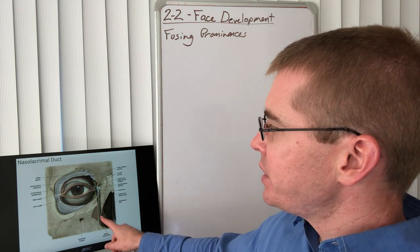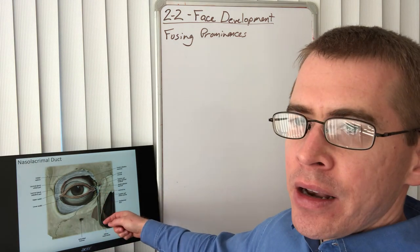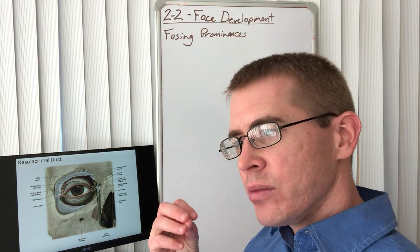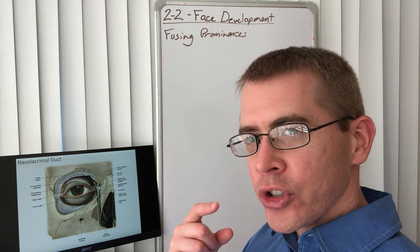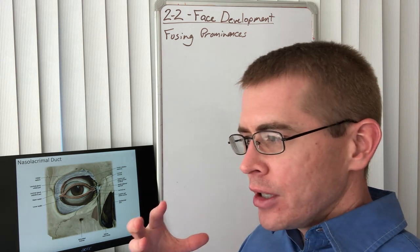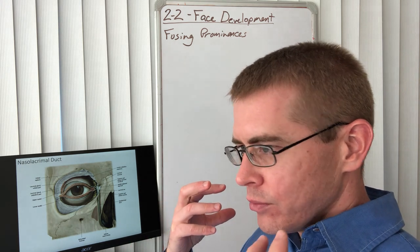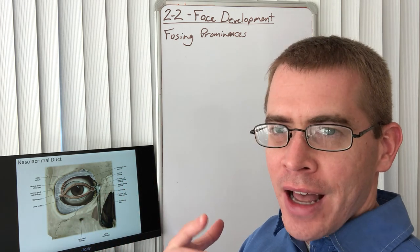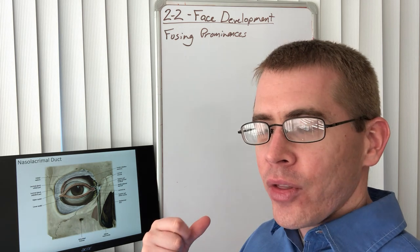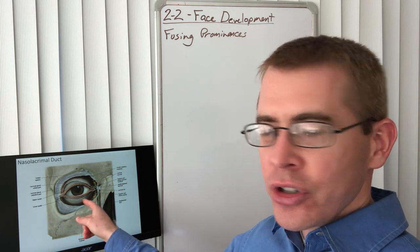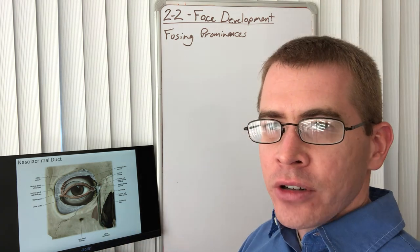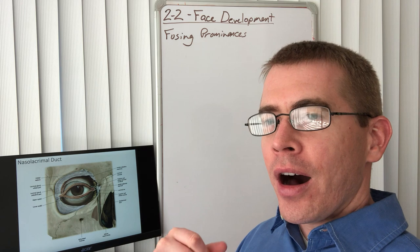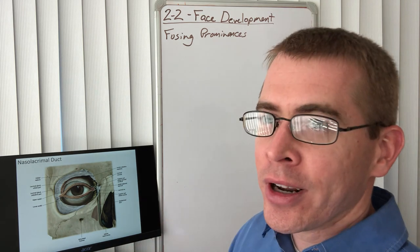Here we see, ghosted in behind these bones, is that nasolacrimal duct. This is the connection between your eyes and your nose. If you've ever cried, bawled your eyes out so much that your nose has gotten all snotty, then this explains why that happens. Because your tears travel through the duct into your nose. I don't know what that's like. I've never cried in my life. So, I'll have to take your word for it, but that's what I understand.